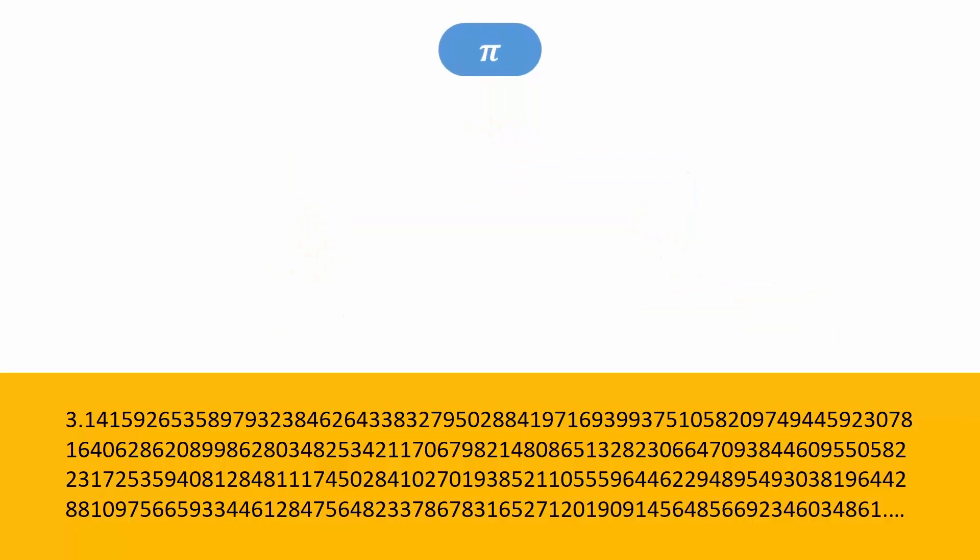As it is not possible to write down all the digits in pi, whenever we have to write pi, we simply use the Greek symbol π. In calculations, we can't use an endless value, so we use approximate values of pi such as 3.14 or 22 divided by 7.